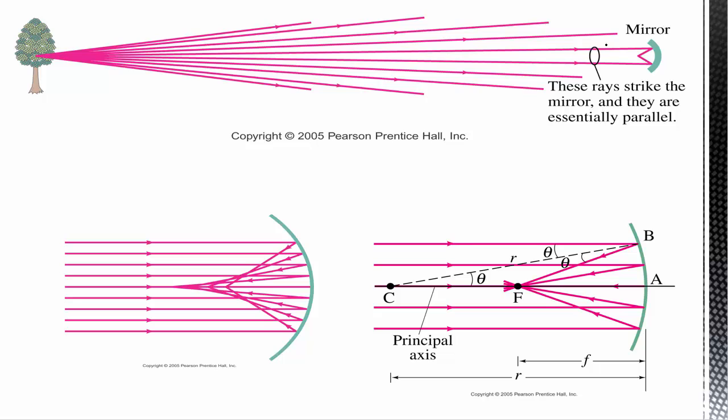This is true for objects that are relatively far away. You have a tree way over here — the light coming off that point on the tree spreads out in all directions — but if your mirror is small enough, or the tree is far enough, the rays that strike the mirror will be very nearly parallel. If you have a distant mountain, they will be even more parallel. Or, as mentioned previously, rays coming from the sun will be essentially perfectly parallel since they are coming from so far away.